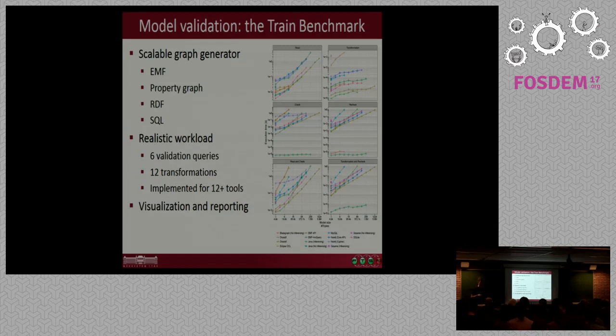So the first use case, the Train Benchmark railway validation, is basically a benchmark paper with the implementation available on GitHub. We implemented a set of scalable generators. We can generate graphs in the Eclipse modeling framework, property graphs, the semantic web's RDF format, and SQL for relational databases. And the benchmark defines a set of validation queries that must be enforced during the design of the railway network. We implemented this for more than a dozen tools and implemented automated visualization and reporting stuff. So if you have a graph query engine that you would like to use on large and continuously changing graphs, it's worth giving a try to the Train Benchmark system.